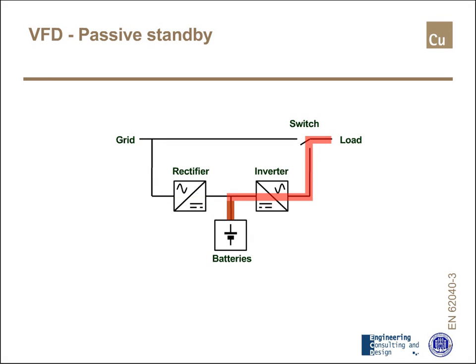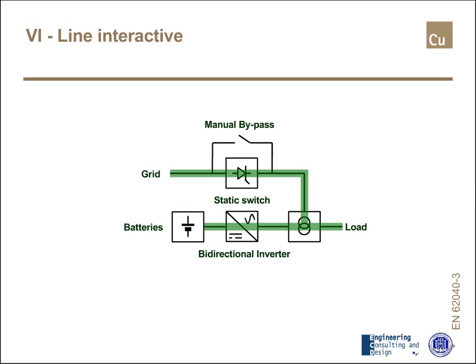Without the network, the flow of energy is from the batteries through the inverter to the load. That means I have to change this path of energy, moving from the presence of the network to the supply from the batteries.